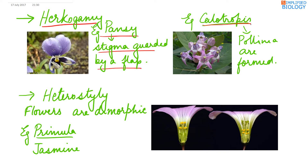In Calotropis, pollinia — meaning the complete anther lobe as such — are transferred by insects. They have to be carried from one flower to another flower by insects, so cross-pollination occurs.